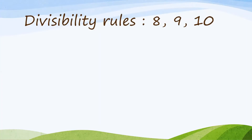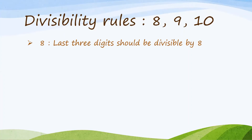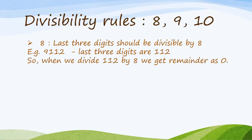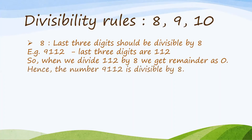Divisibility Rules of 8, 9 and 10. The Divisibility Rule of 8 says that the last 3 digits should be divisible by 8. For example, the number 9,112 — the last 3 digits are 112. When we divide 112 by 8, we get remainder 0. Hence, the number 9,112 is divisible by 8.